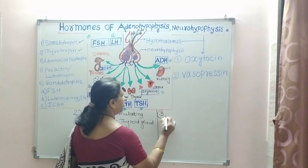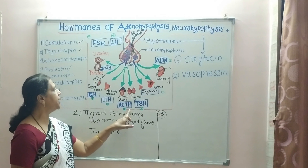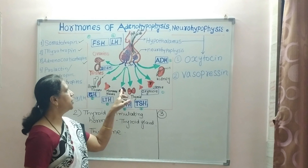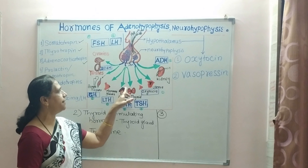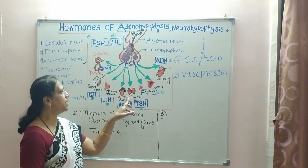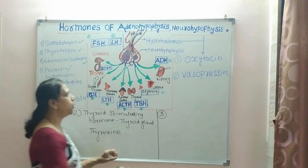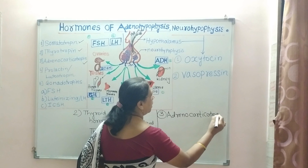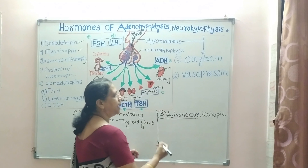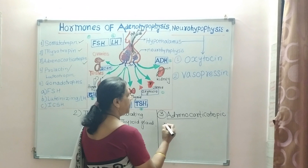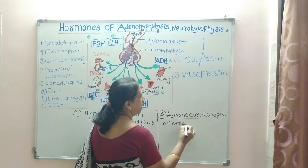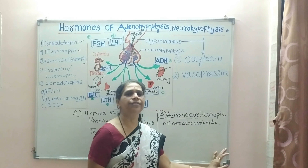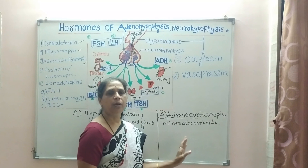The third important hormone secreted by the anterior pituitary is ACTH, also known as adrenocorticotropic hormone. It is secreted by the adrenal cortex — the upper part of the adrenal gland, which sits above the kidney. It stimulates secretion of mineralocorticoids, cortisol, and glucocorticoids, which are involved in fat metabolism and glucose metabolism.